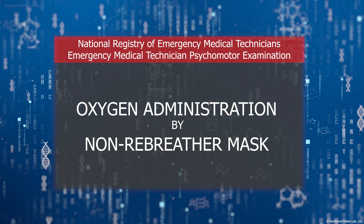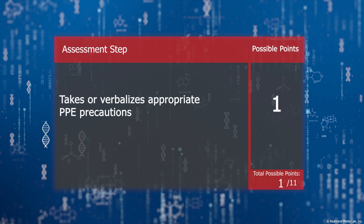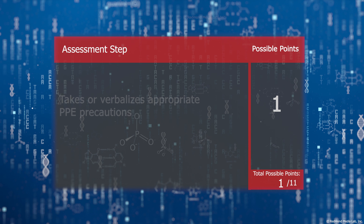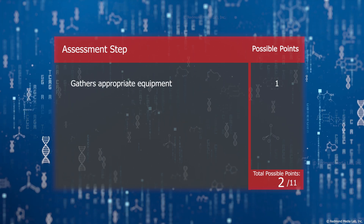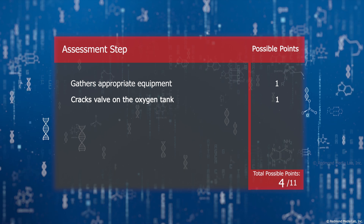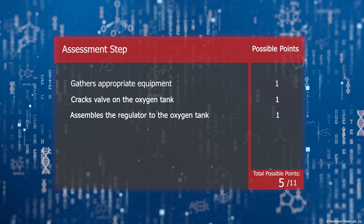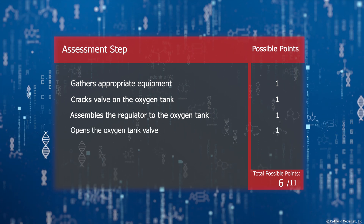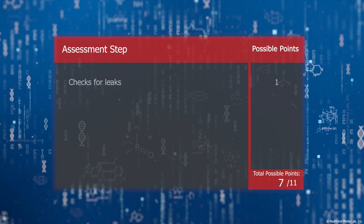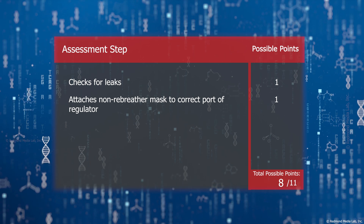Oxygen administration by non-rebreather mask. Takes or verbalizes appropriate PPE precautions. Gathers appropriate equipment, cracks valve on the oxygen tank, assembles the regulator to the oxygen tank, opens the oxygen tank valve, checks oxygen tank pressure, checks for leaks, and attaches the non-rebreather mask to the correct port of the regulator.